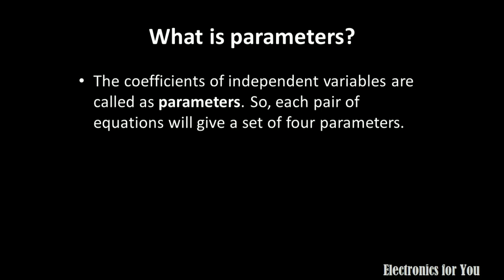Before Z parameters, let us see what a parameter is. The coefficients of independent variables are called parameters. In a two-port network, we use four variables, out of which any two can be considered as independent variables and the other two will be dependent variables. Therefore, each pair of equations will have a set of four parameters.